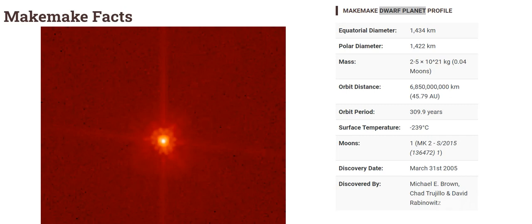Surface temperature is minus 239 degrees Celsius. Moons: one. Discovery date is March 31st, 2005, and discovered by Michael E. Brown, Chad, and David.